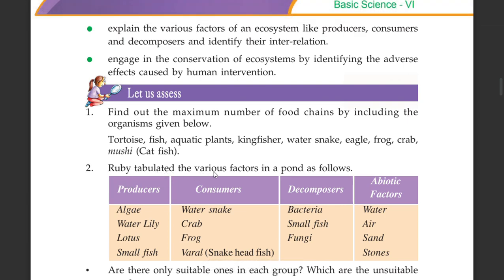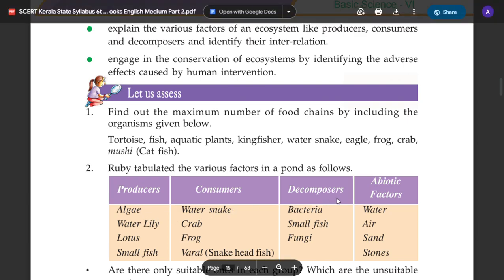Robe tabulated the various factors in a pond as follows: Producers, Consumers, Decomposers, Abiotic Factors.